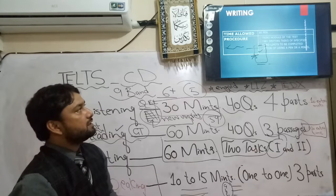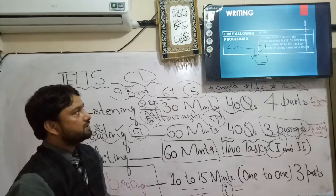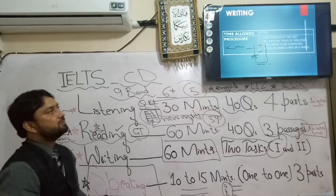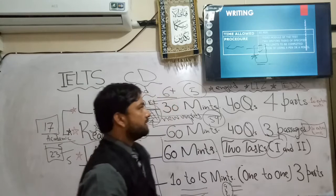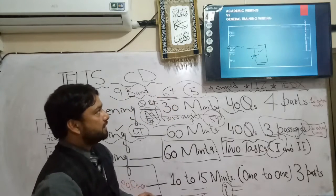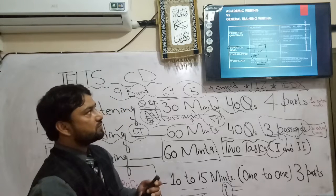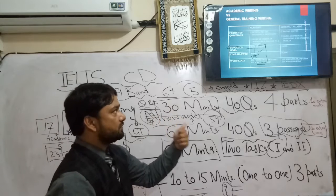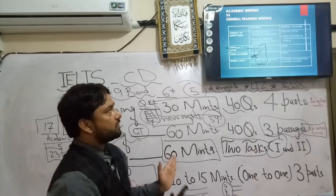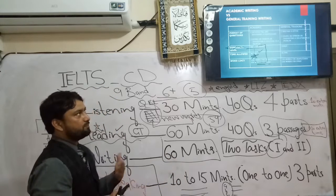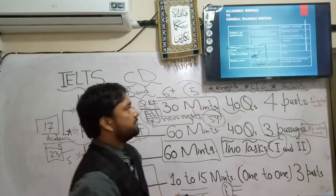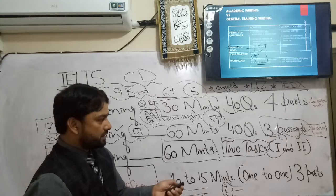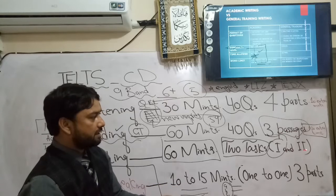For writing: you will be given 60 minutes — the third module of the test. Two tasks will be given. In GT, Writing Task 1 requires you to write a letter. In Academic, Writing Task 1 requires you to describe a graph, chart, bar chart, map, or similar visual. Writing Task 2 is the same for both GT and Academic students.